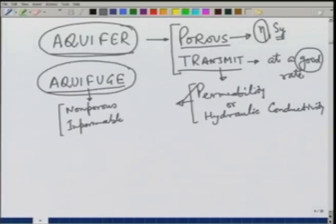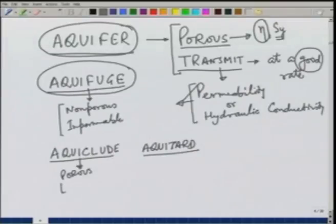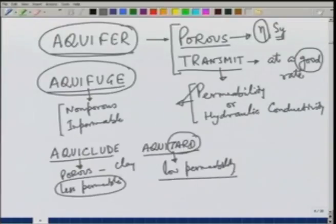The other two classifications are aquiclude and aquitard. Aquicludes are porous and less permeable — they can store water, for example clay, but the conductivity is very small. Aquitards, as the name suggests, retard the velocities — it is a very low velocity formation. Out of these, as discussed, the aquifer is the one we will be targeting for our purpose.